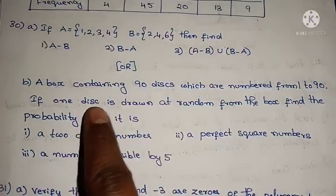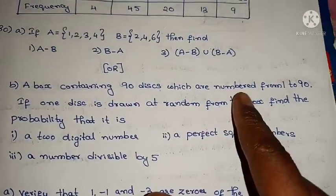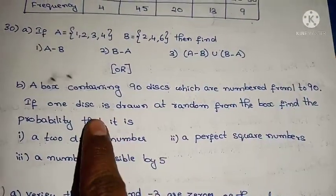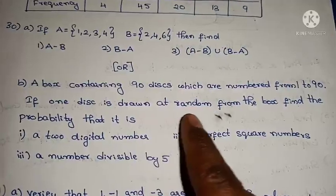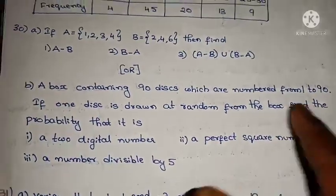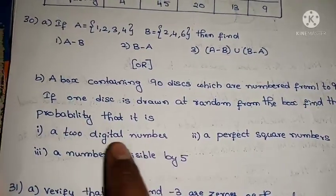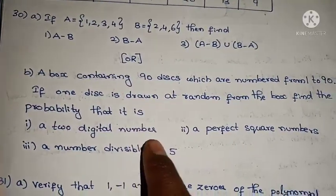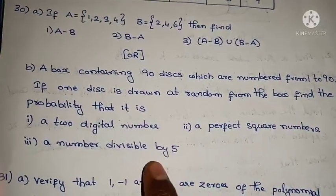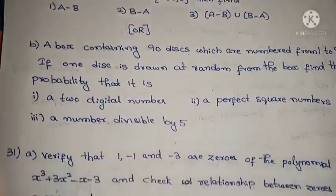The choice problem: A box contains 90 discs which are numbered from 1 to 90. If one disc is drawn at random from the box, find the probability that it bears a two-digit number, a perfect square number, or a number divisible by 5.